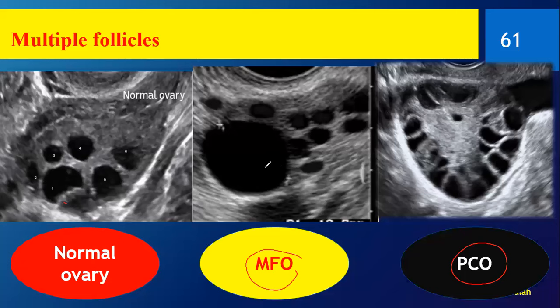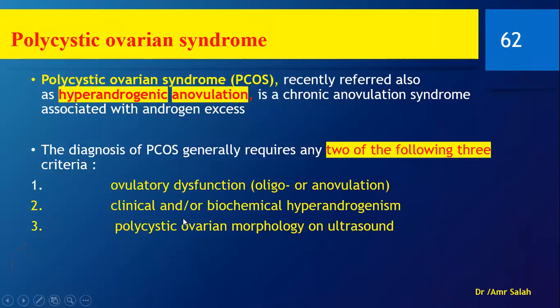When I have many follicles with one of them more than 10 mm arranged in periphery and stroma — this is multifollicular. If all are small and arranged in the periphery with a nearly echogenic center — this is PCO. If I have follicles as in normal — this is normal. These are the three appearances of follicles in the ovary. For the diagnosis of PCOS, we said we need more than one criterion.